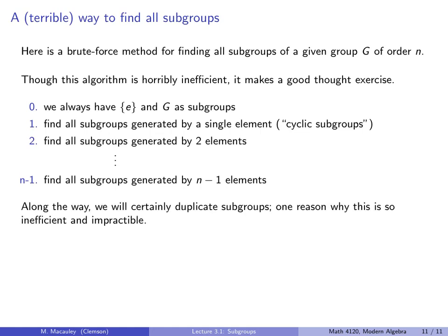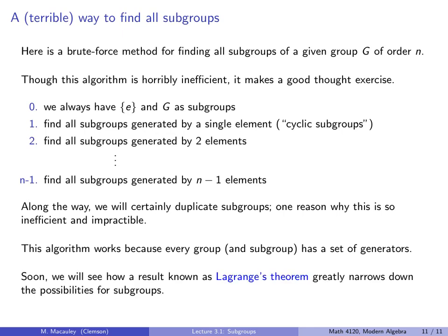Now along the way, we will certainly duplicate subgroups. This is one of many reasons why this is so inefficient and impractical. However, the algorithm works because every group and every subgroup has a set of generators. Soon, we will see how a result known as Lagrange's theorem greatly narrows down the possibilities for subgroups, rendering a lot of these steps just completely unnecessary.